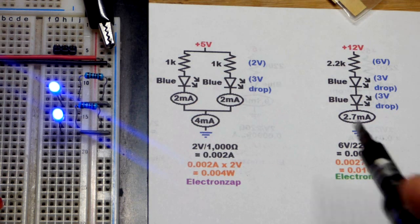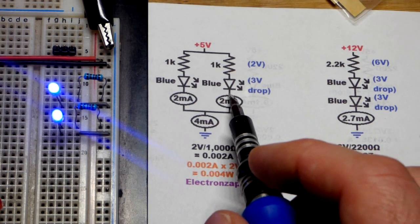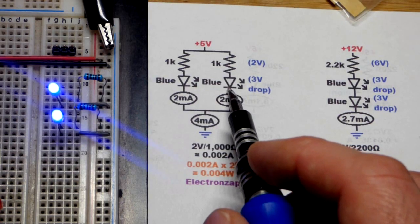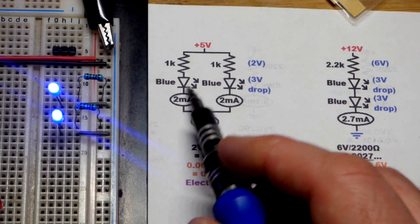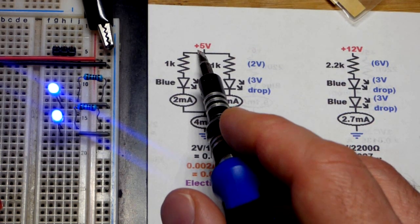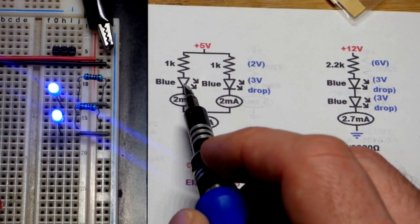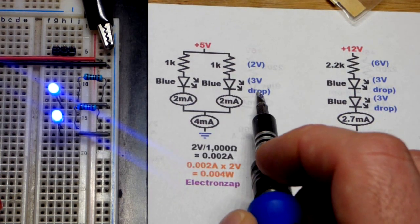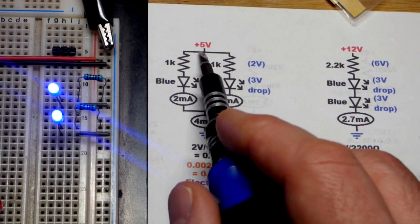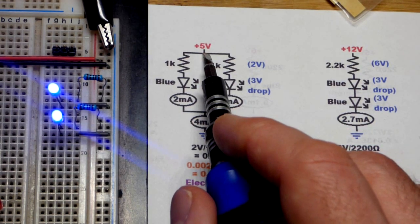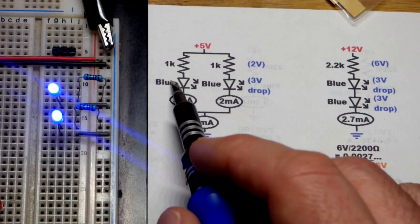So now, in the previous short—or earlier in the video if you're watching the long video—we looked at lighting two red LEDs in series when we had 5 volts. We cannot do that with the blue LEDs, as you see right there, because each one of them drops about 3 volts. That would be dropping 6 volts—5 volts is not enough voltage to push current through there.